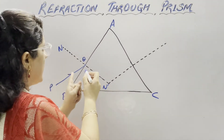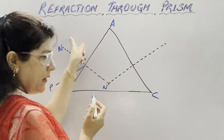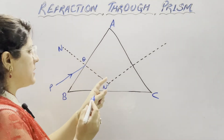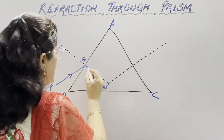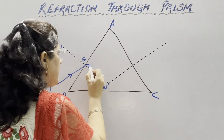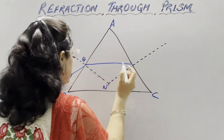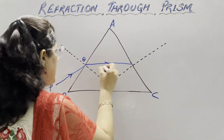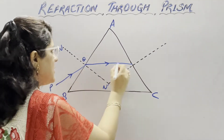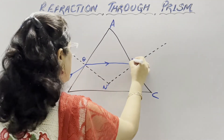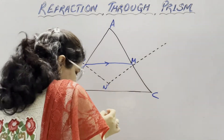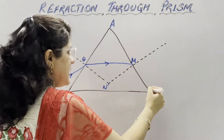Because the ray is entering from air, which is a rarer medium, to glass, which is a denser medium, it will bend towards the normal. So when it bends towards the normal it will follow this path. This is the refracted ray; this is the incident ray. QM is the refracted ray.